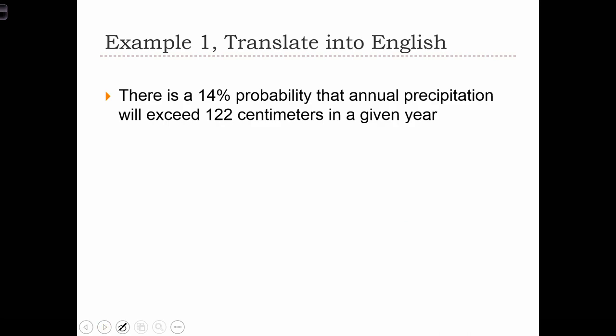So in words, there is a 14% probability that annual precipitation will exceed 122 centimeters in a given year.